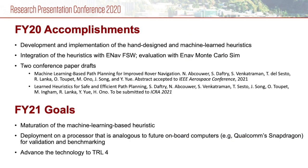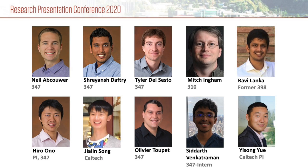Two conference papers are being authored based on these FY20 results. In FY21, we will continue to mature the machine learning-based heuristic and deploy it on a processor that is analogous to future onboard computers, such as Qualcomm Snapdragon, for validation and benchmarking. This technology will be advanced to TRL-4 at the conclusion of this task in FY21. This research was carried out in collaboration by a cross-divisional team of JPL and Professor Yisong Yue's group at Caltech. We appreciate the support of the JPL Office of Chief Scientist and Chief Technologist.